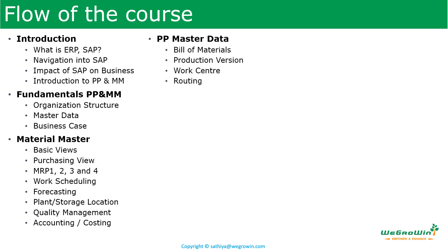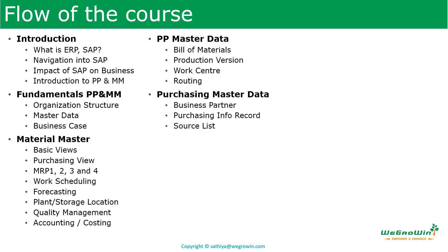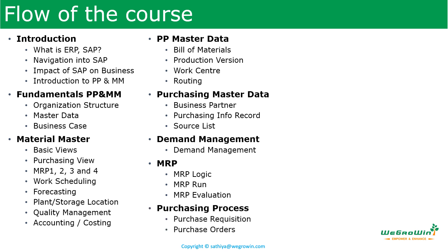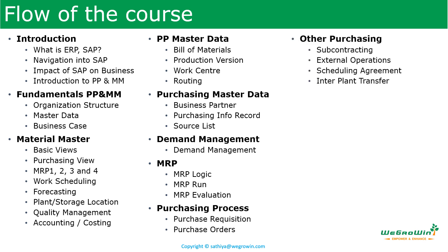Then we discuss PP-related master data like bill of materials, production version, work center, and routing. Then purchasing-related master data like business partner, purchasing info record, and source list. Then planning concepts like demand management and MRP. Then purchasing processes like purchase requests and purchase orders. Then specific purchasing activities like subcontracting, external operations, scheduling agreement, and interplant transfer. Then inventory management like goods receipt, goods issue, and physical stock verification. Then production order-related activities like creating, releasing and execution of production orders, and capacity management. Finally, standard configuration of PP and MM modules.